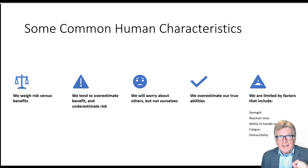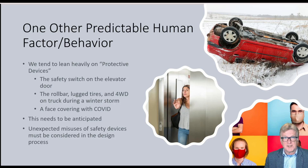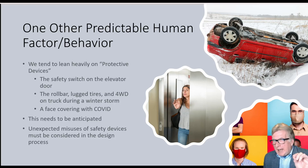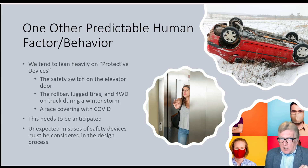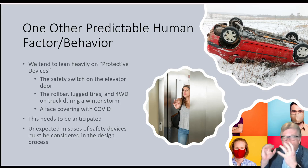The bottom line is engineers need to take this into account when designing products, because we almost all share these common characteristics. When we design a safeguard into a product or system, it results in some other predictable behavior. This could be a shield or guard on a piece of equipment, or a safety switch on an elevator.